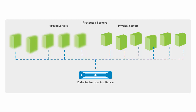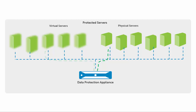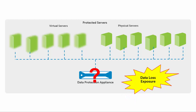Most data protection appliances do a good job to protect both physical and virtual application servers. When a protected server crashes or has issues, the data protection appliance can recover the application server to a known good point in time so the application can become operational again. But what if the data protection appliance itself crashed or has issues? If this happens, a production environment's data is exposed to potential data loss. Most environments do not have a backup plan for their backup appliances.